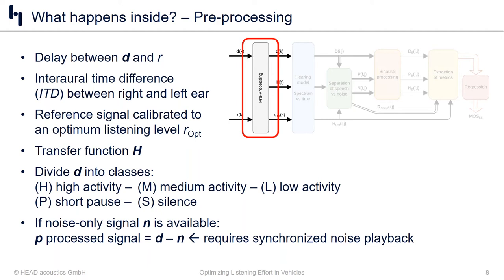The next phase is pre-processing, which involves level adjustments and time alignments. Two things stand out from this step. First, we calculate the ITD — the inter-aural time difference — the difference in arrival time between signals reaching the right and left ear, which is generally very important for binaural applications. Second, we classify the degraded signal into different classes of activity — high activity, medium activity, and so on. Those familiar with ITU-T G.160, the SNRI metric, will see strong similarities to this step.